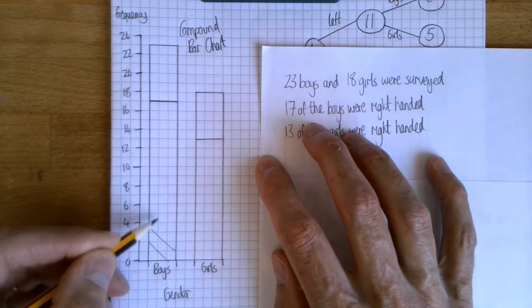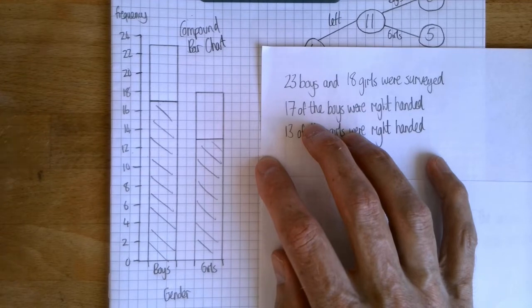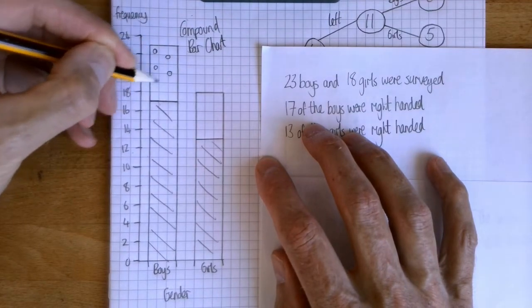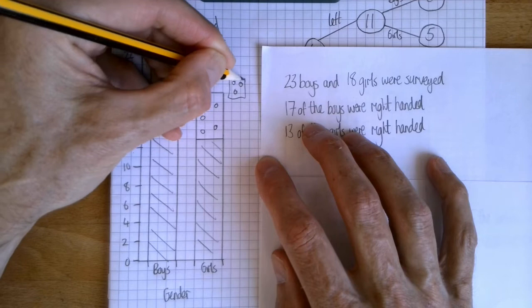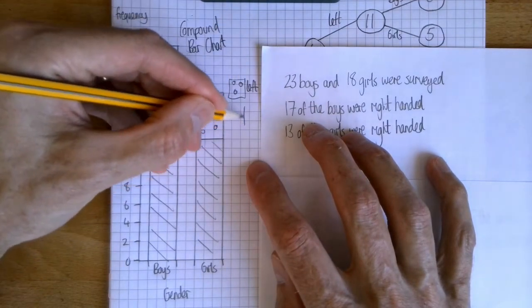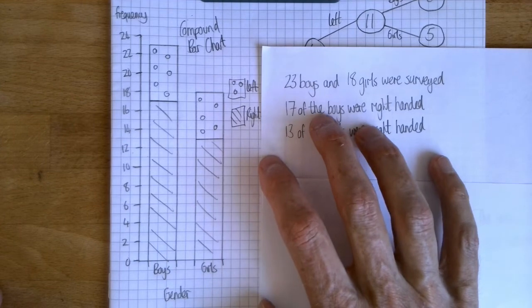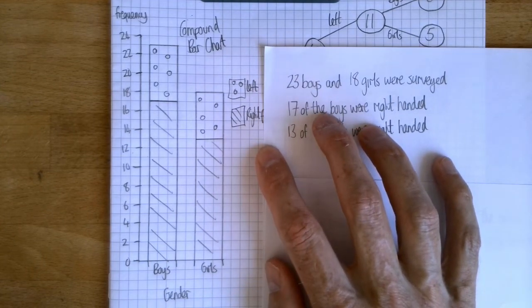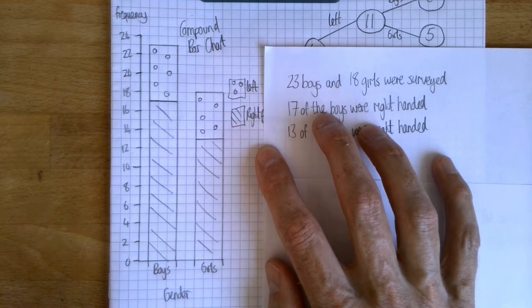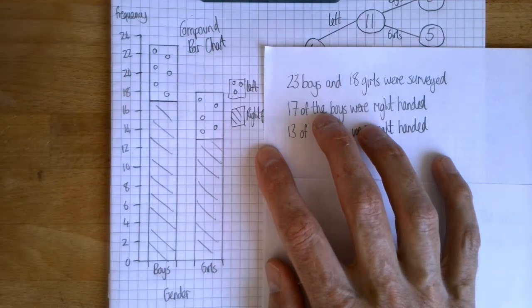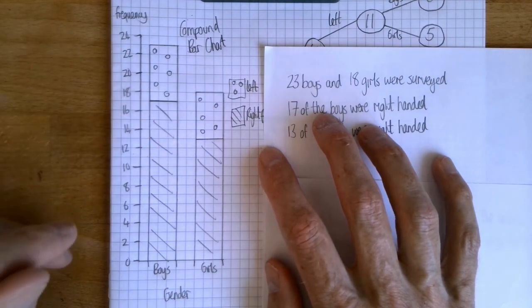Now we need a key so it's obvious which is which. So I'm going to use stripes for right-handed people and I'm going to use dots for left-handed people. And then at the side I'll have a little key here that says that's left-handed people and that's right-handed people. So I've completed my compound bar chart. Let's just review the elements again: one big bar for boys, one big bar for girls separated. Side axis numbered and labeled frequency.